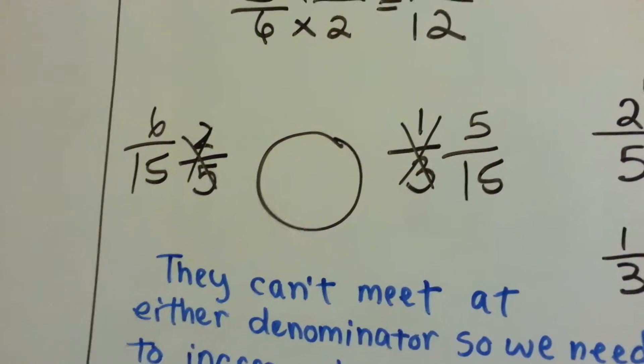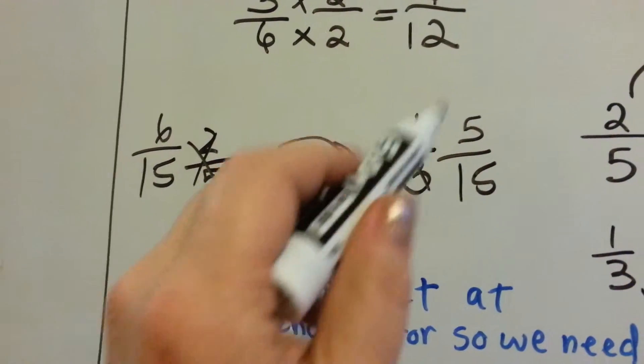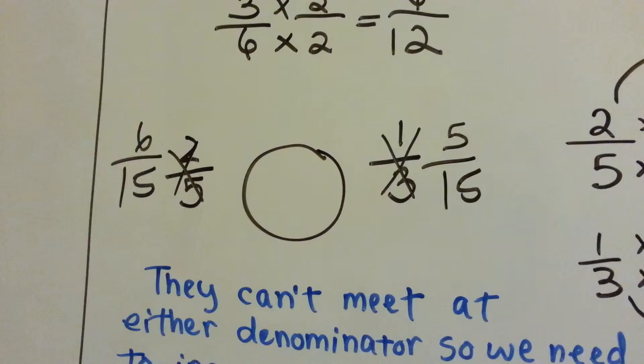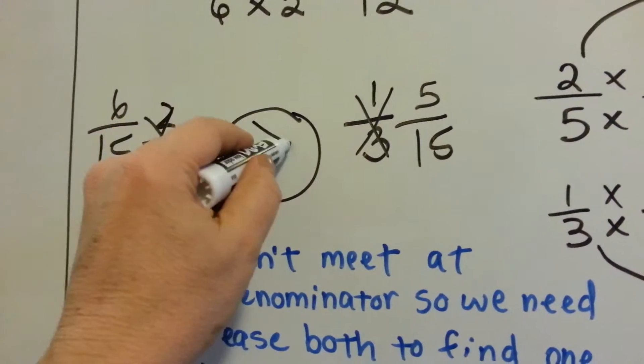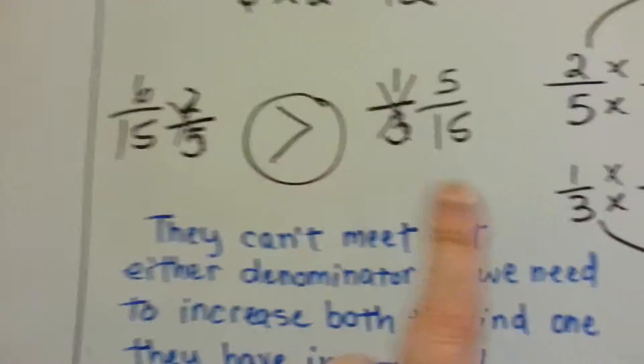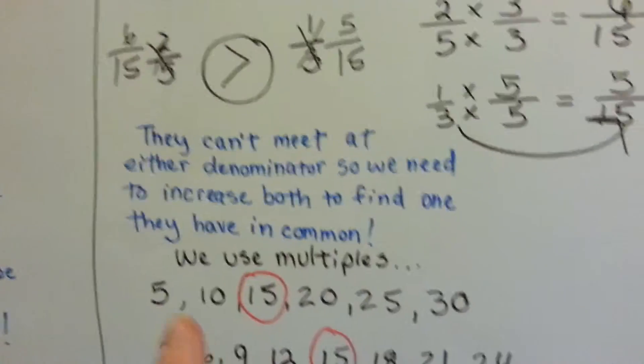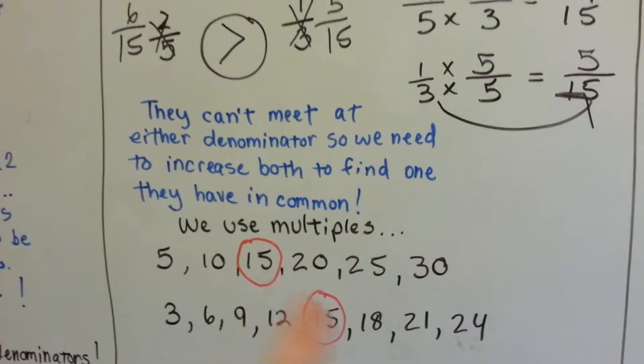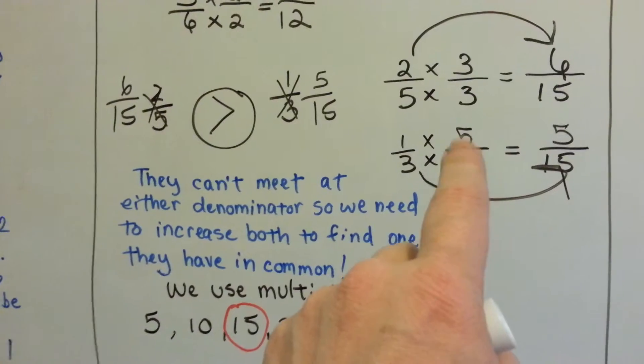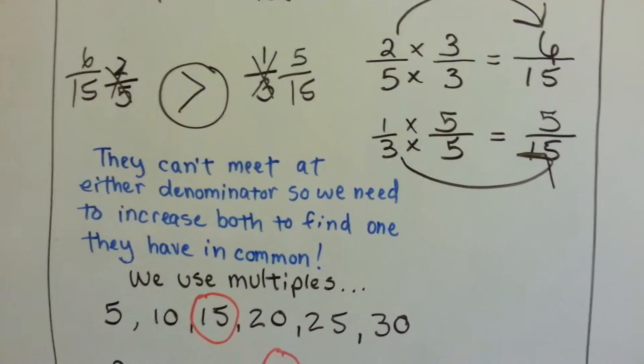Now, can you see which one's bigger? 6 fifteenths or 5 fifteenths? If you said 6 fifteenths, you're correct. See how even though they couldn't meet at one or the other denominator, we found a common multiple for them to meet at and we multiplied the numerator and denominator by the same thing to get there.